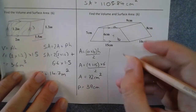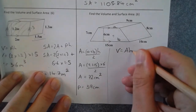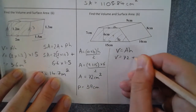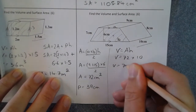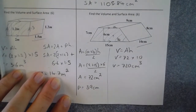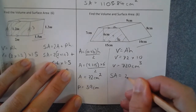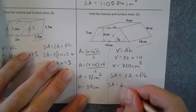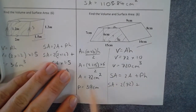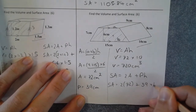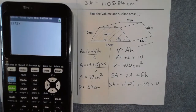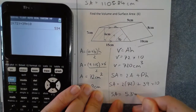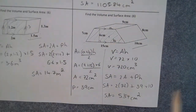Now using those: volume of a prism is A times h, so area 72 times depth 10 gives a volume of 720 cubic centimeters. Surface area is 2A + Ph: two lots of 72 is 144, plus the perimeter 39 times 10. Typing 2 times 72 plus 39 times 10 gives a surface area of 534 squared centimeters.